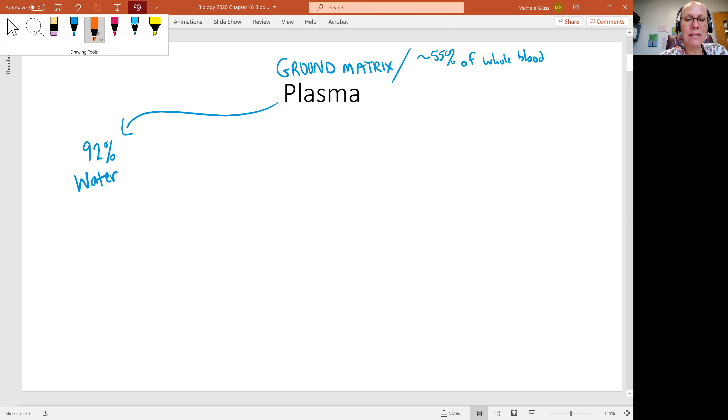We're going to see that 7% is going to be consisting of what we can collectively call plasma proteins. When we talk about these plasma proteins, we have three important categories. The first one to mention is albumin, which is going to be the most abundant of the plasma proteins. Of the 7% of plasma proteins, 54% will be albumin.